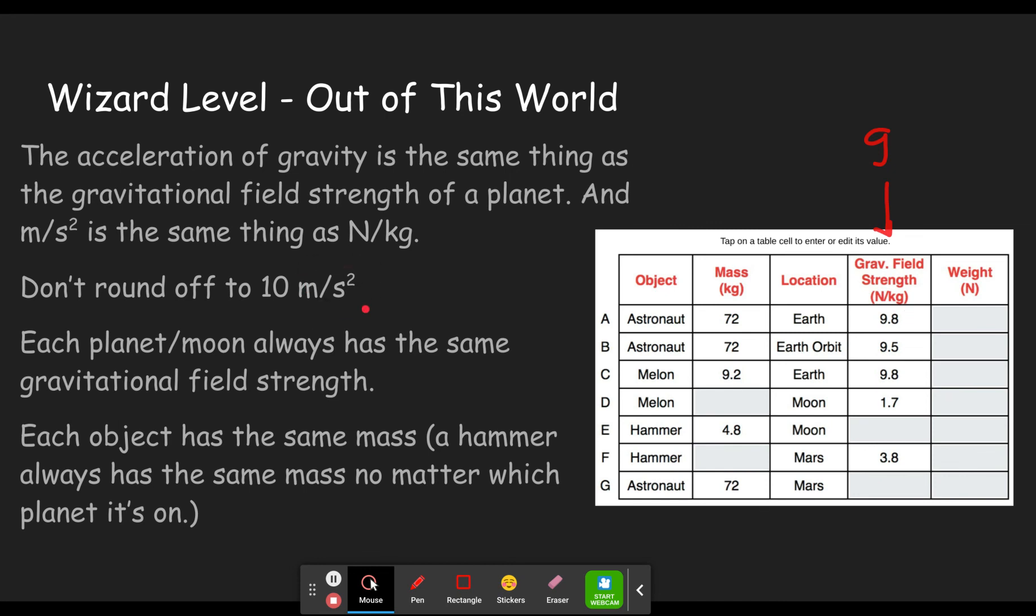Each planet or moon always has the same gravitational field strength. The acceleration of gravity is produced by the planet or moon you're on. And so since both of these are on the moon, they both have the same gravitational field. In this case, 1.7. Mars has the same gravitational field.